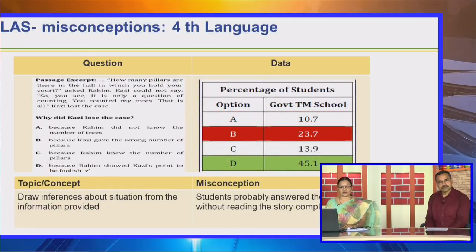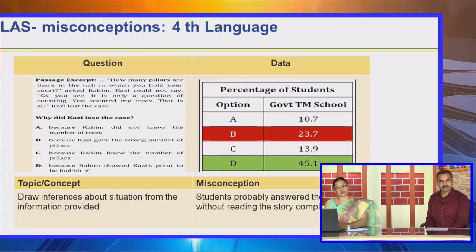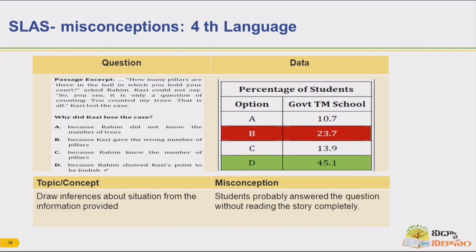We have already seen the passage in previous slides. This question is also related to that passage: 'Why did Kazi lose the case?' The right answer is D — because Rahim showed Kazi's point to be foolish. But most students answered B, meaning students probably answered without reading the story completely.